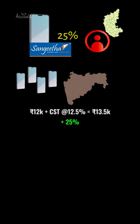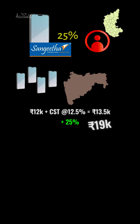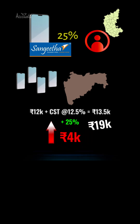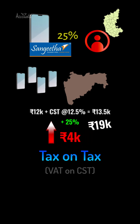Adding a profit margin of 25%, the selling price would be 19K. Had there been the concept of ITC, the selling price would have been 15K. Now this increase in selling price is because of tax on tax, i.e. VAT on the CST component.